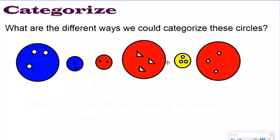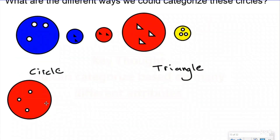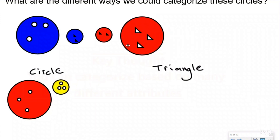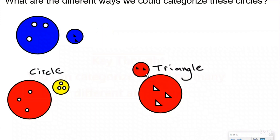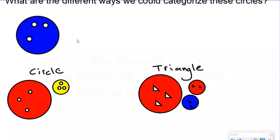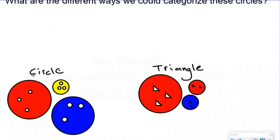Let's do one more — categorize them based on the shape inside. Some have a circle inside and some have a triangle. So we group: this one has a circle inside, this one also has circles, this one has triangles, this has triangles, that has triangles, and this one has circles. Now we've grouped them based on the shape inside.